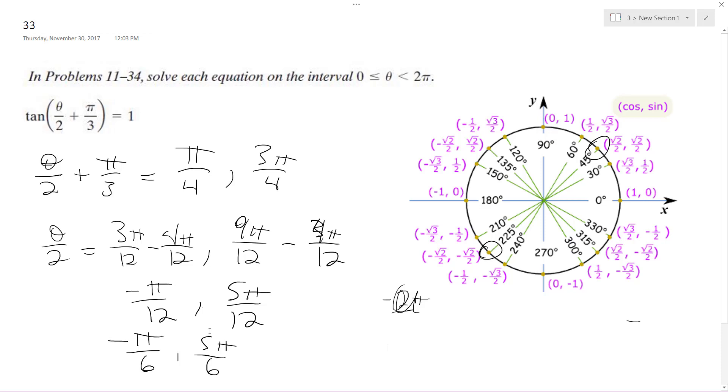Alright, so after doing some quick math, this doesn't work, but this is valid. We add 2 pi to it because we want it between 0 and 2 pi. So our final solution is theta is equal to 11 pi over 6.